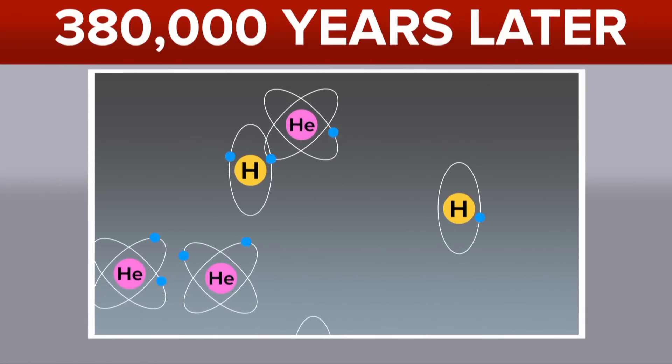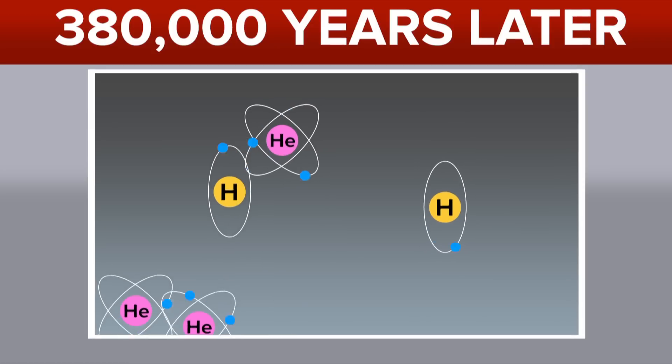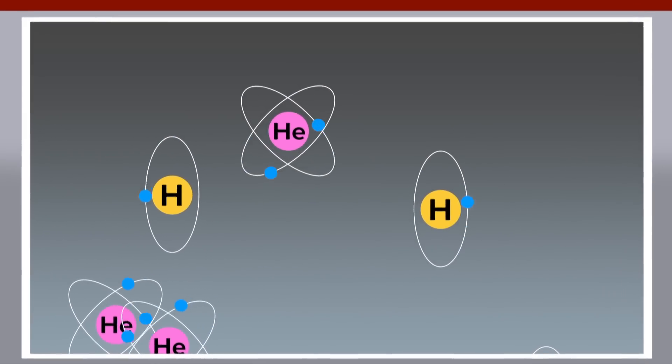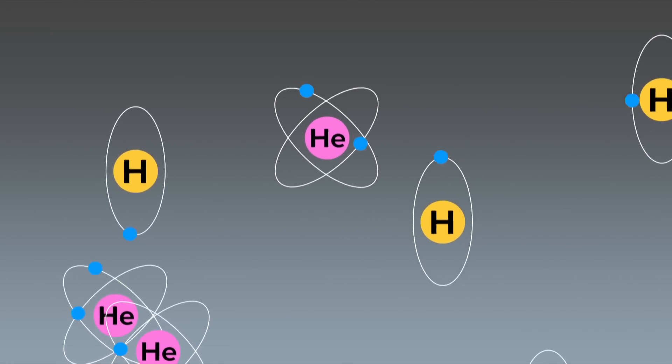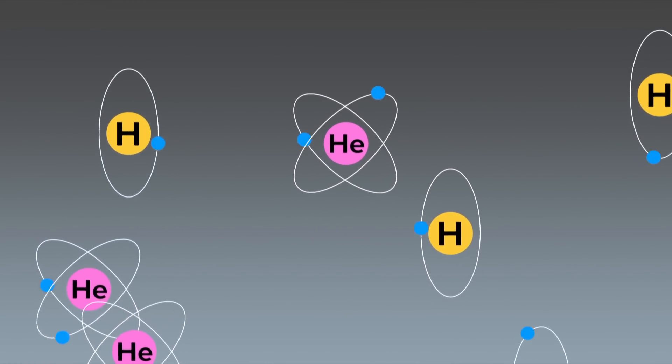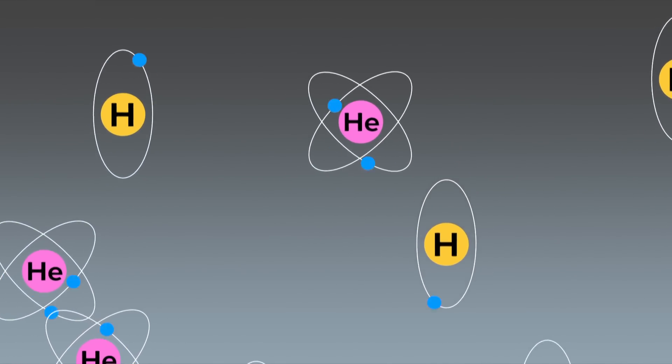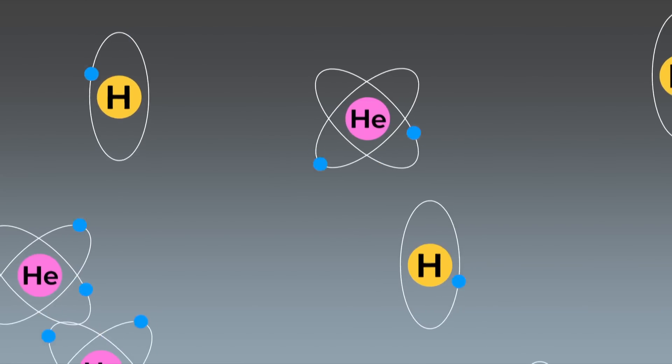The second thing you need to know is that while atomic nuclei were formed in three minutes, actual atoms took much longer, about 380,000 years. So bare protons that eventually became hydrogen atoms existed for a very long time.